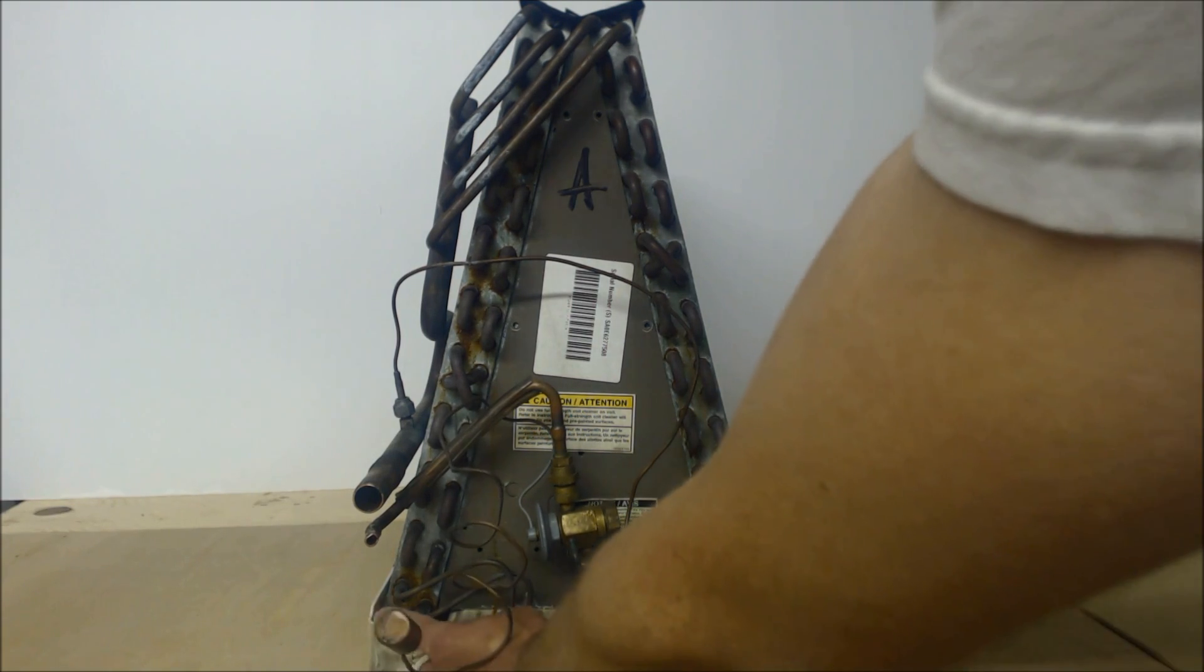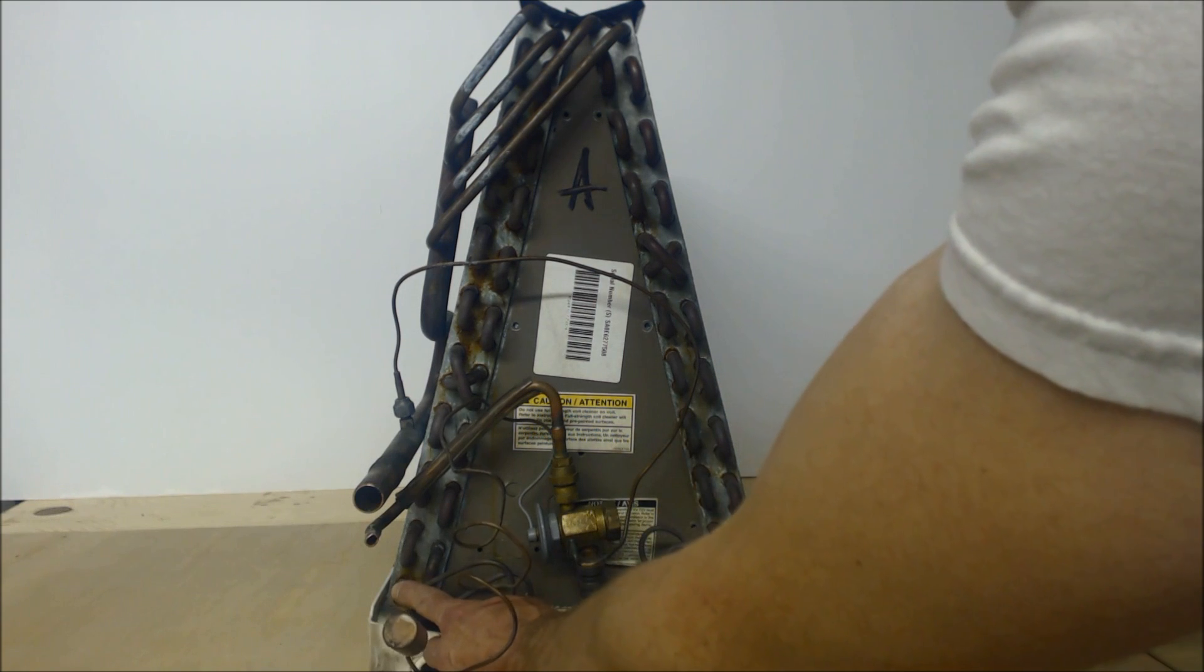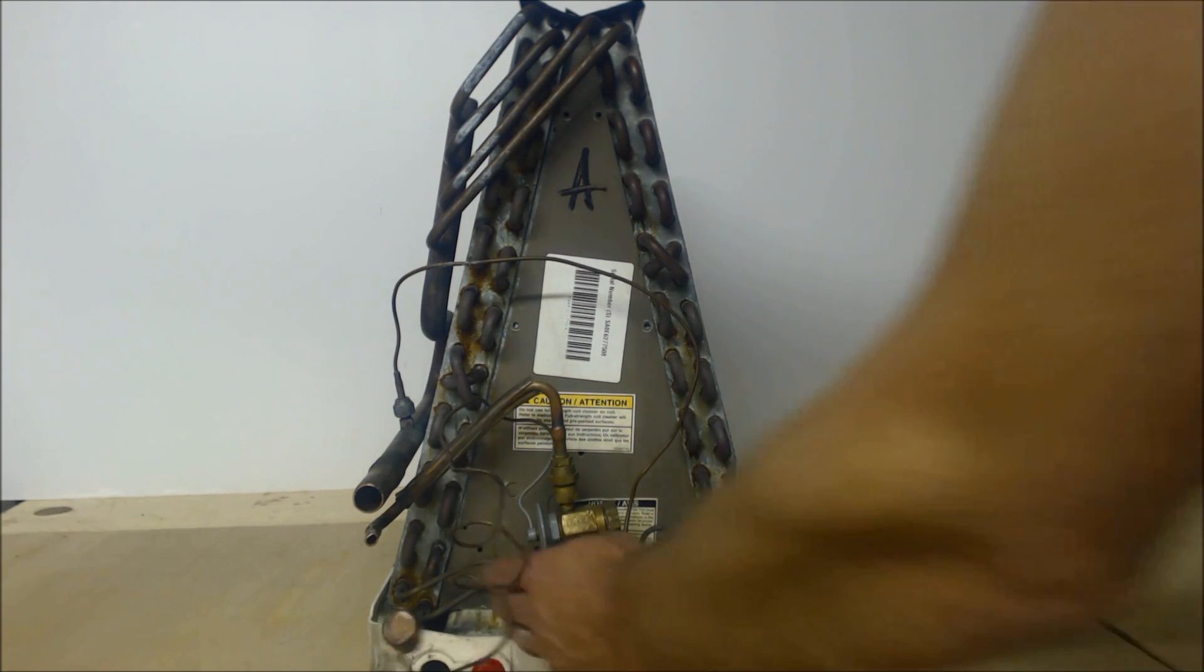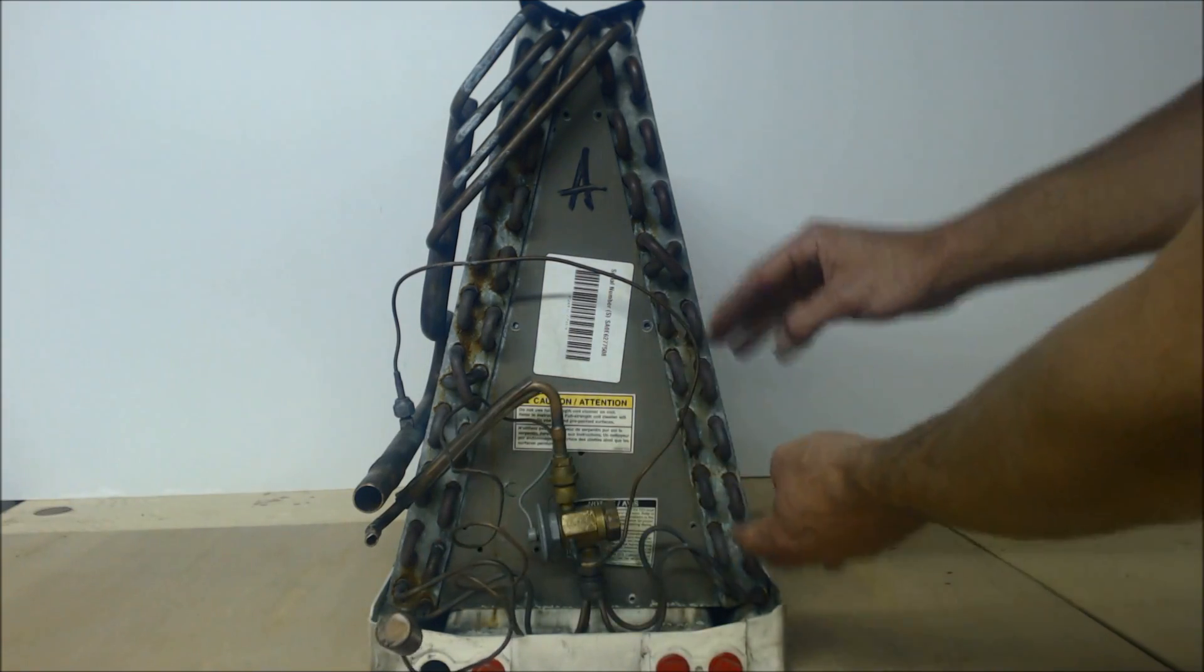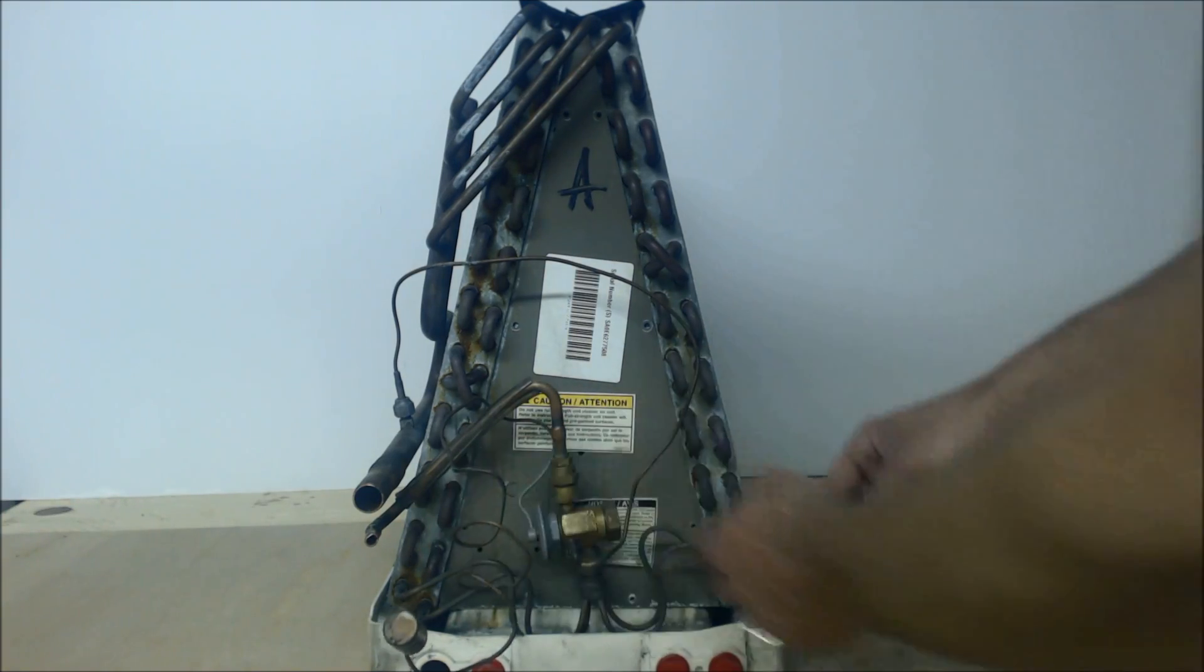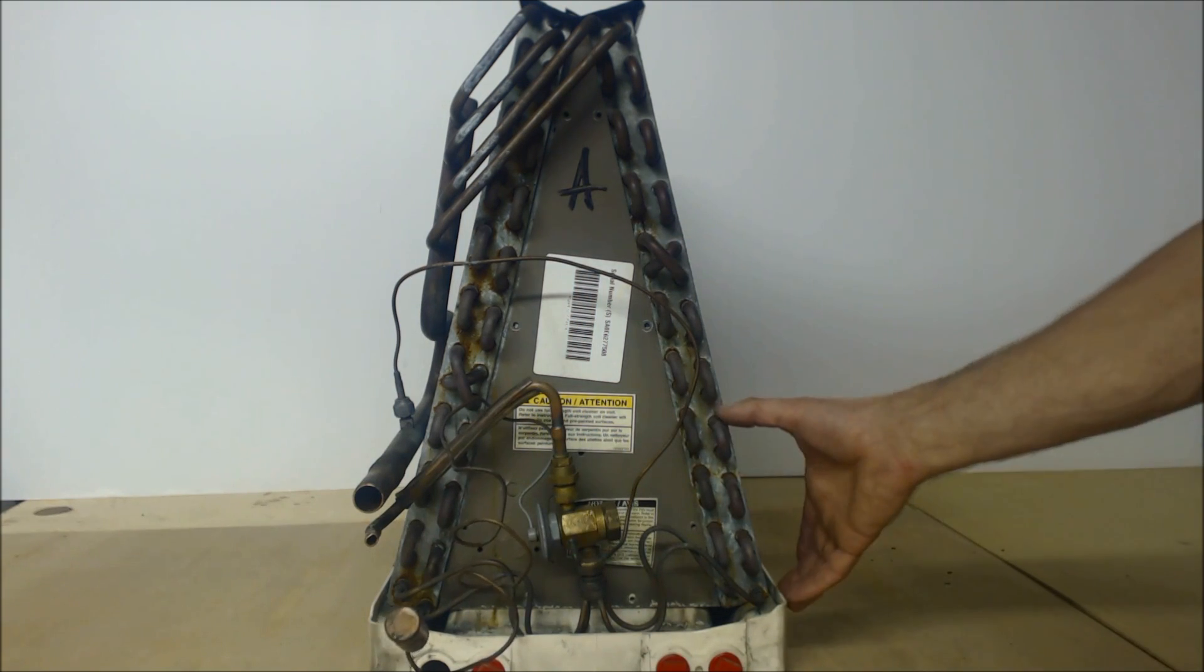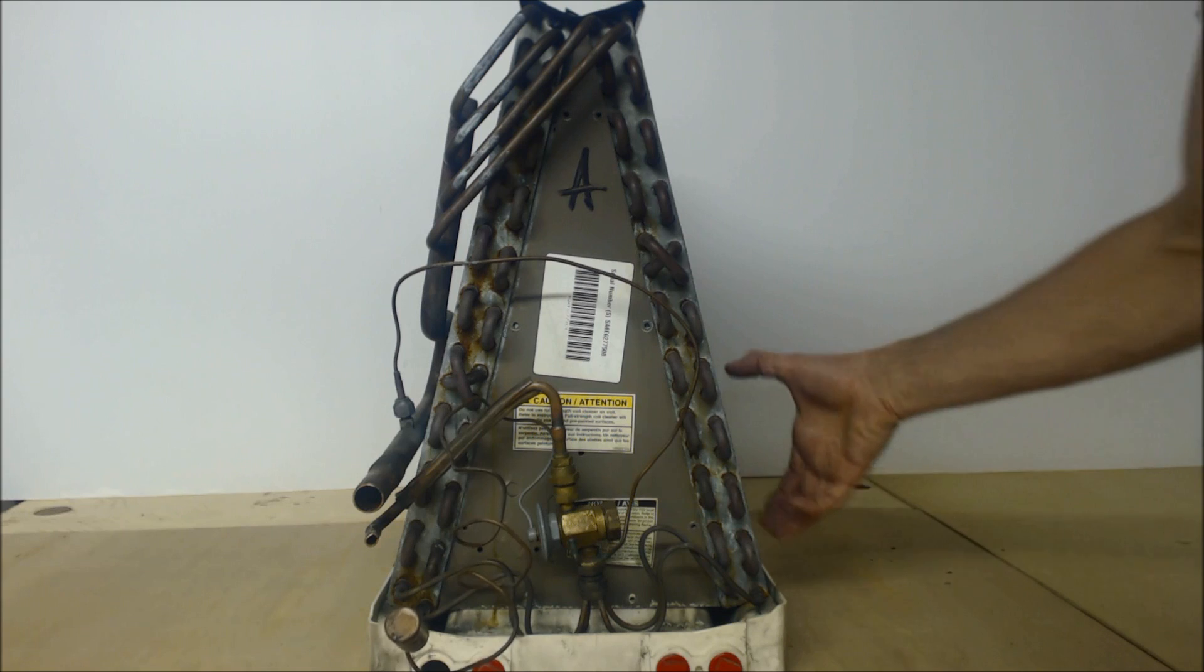Then it comes into the bottom of the evaporator coil as 20% flash gas and 80% liquid, and comes up to the midpoint. All that time it's absorbing heat. The bottom part is mainly liquid.